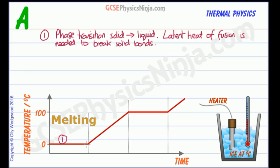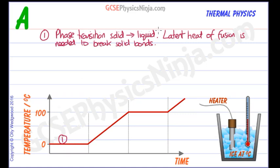Once we've got to the end of that transition phase, it's all liquid — it's all water — and then we continue to heat with the heater, and that's when the temperature starts to rise. Notice that the temperature is not rising during the phase transition from solid to liquid, because any energy that we put in is used to break bonds and not to make the particles move faster, because that's temperature.